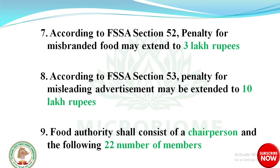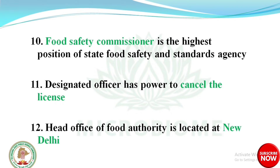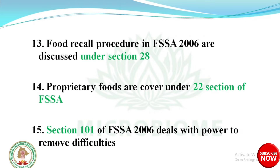Section 52: Penalty for misbranded food — may be extended to 3 lakh rupees. Section 53: Penalty for misleading advertisement — may be extended to 10 lakh rupees. The Food Authority consists of a Chairperson and 22 members. The Food Safety Commissioner is the highest position of the State Food Safety and Standards Agency. The Designated Officer has the power to cancel the license.